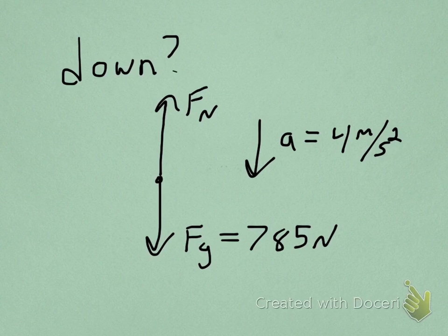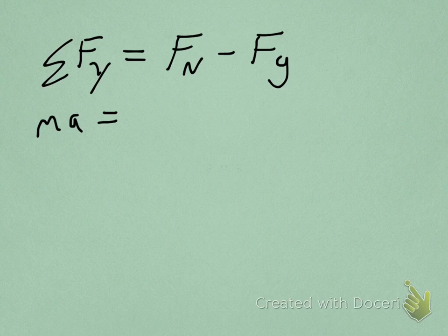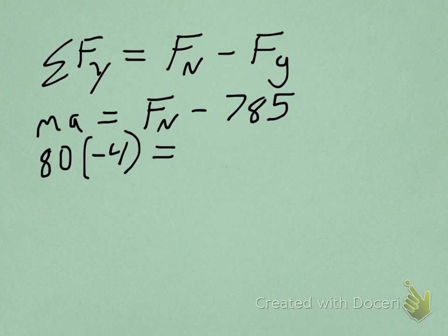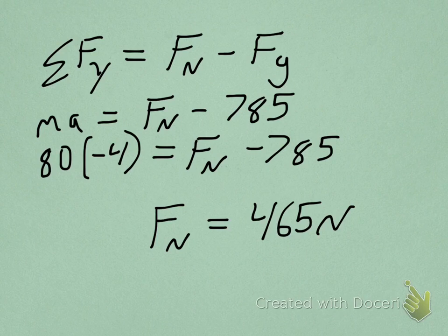Still 4 meters per second squared. So our net force equation is still Fn minus Fg, and net force is still ma. The biggest difference here is that the acceleration is negative because it's down. So you have 80 times negative 4 equals Fn minus 785. This time when you solve for Fn, you get 465 newtons.